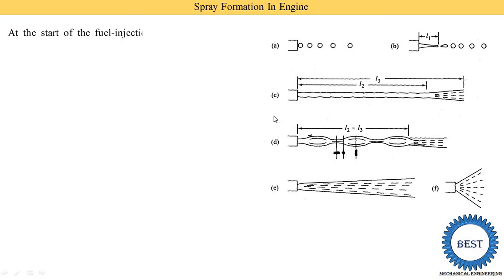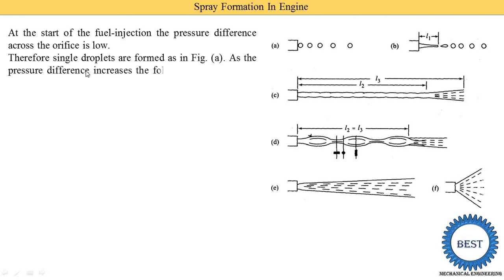At the start of fuel injection, the pressure difference across the orifice is low. The diesel spray starts 30 to 40 degrees before TDC and completes after TDC. So the fuel is sprayed for a certain angular range. The orifice is one part of the injector — on one side is the combustion chamber with compressed air, and on the other side is the diesel at high pressure. This pressure difference is low at the start of fuel injection, and therefore single droplets are formed as shown in figure A.